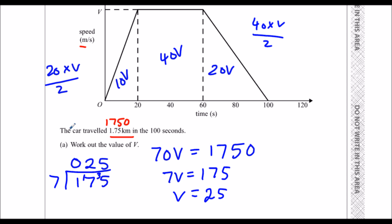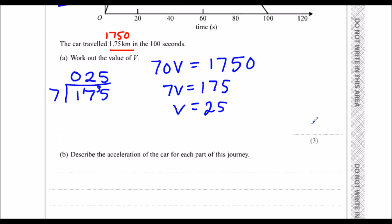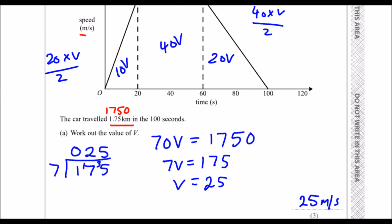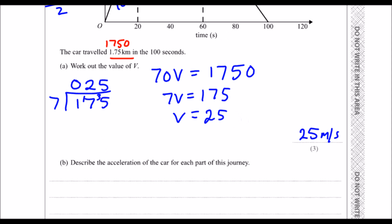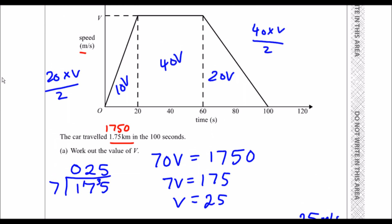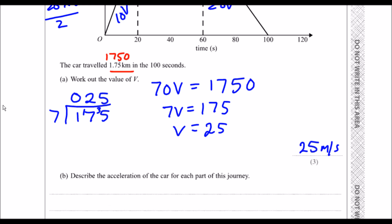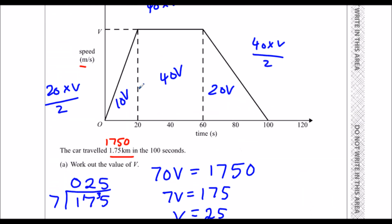So 25 meters per second is the speed up here. Describe the acceleration. So remember, acceleration is the gradient for each part of the journey. So for 20 seconds we're accelerating, then for 40 seconds we're going at a constant speed, so no acceleration, and then for 40 seconds we're decelerating.